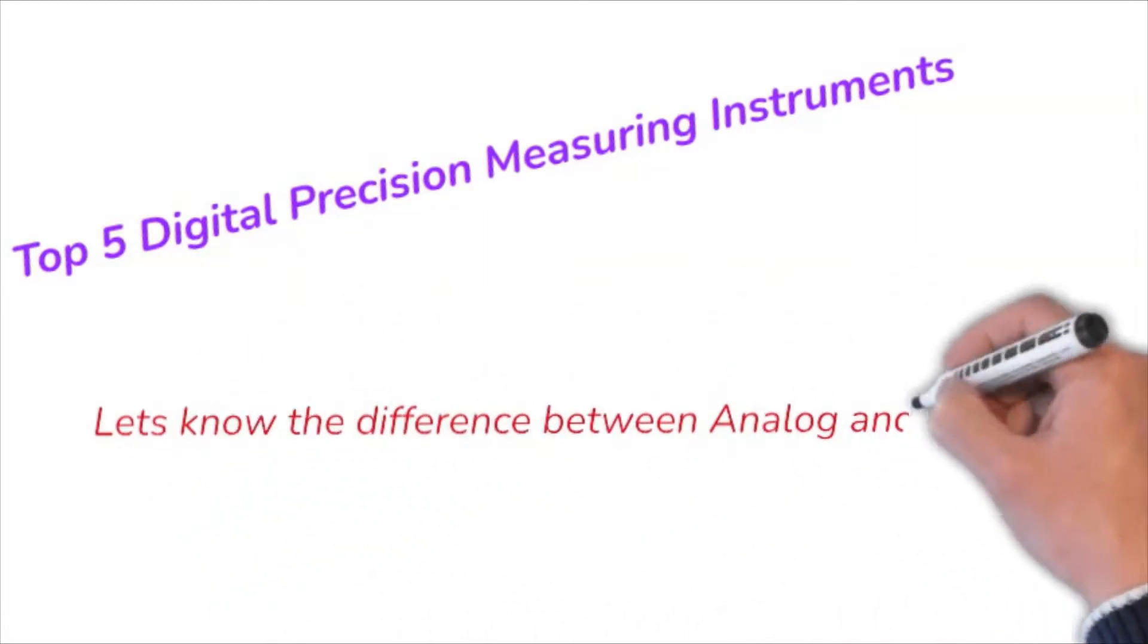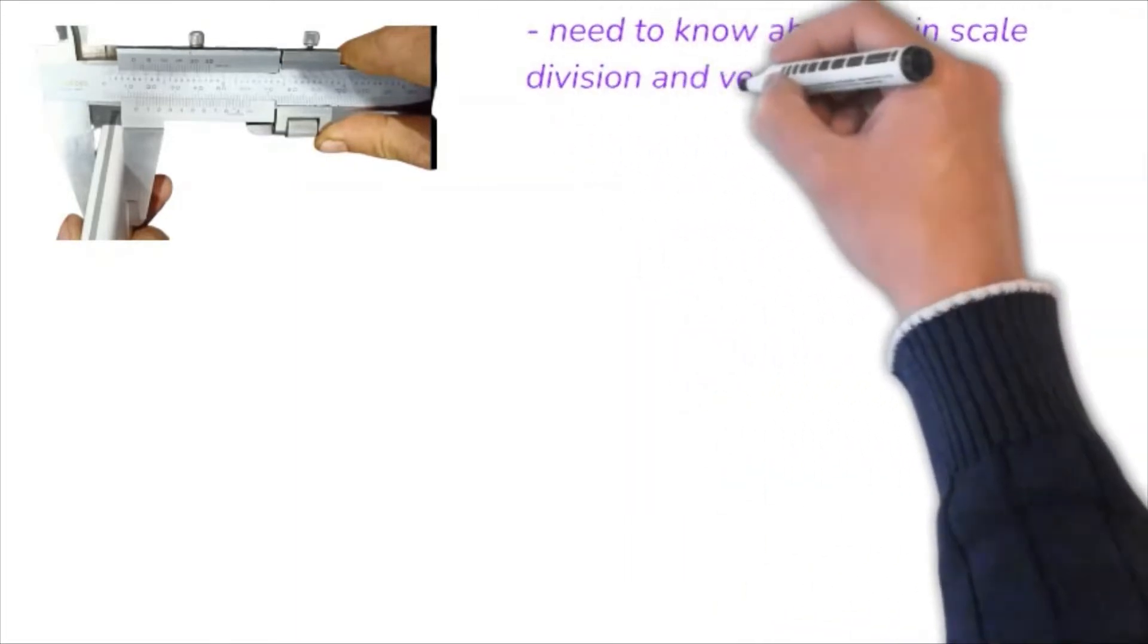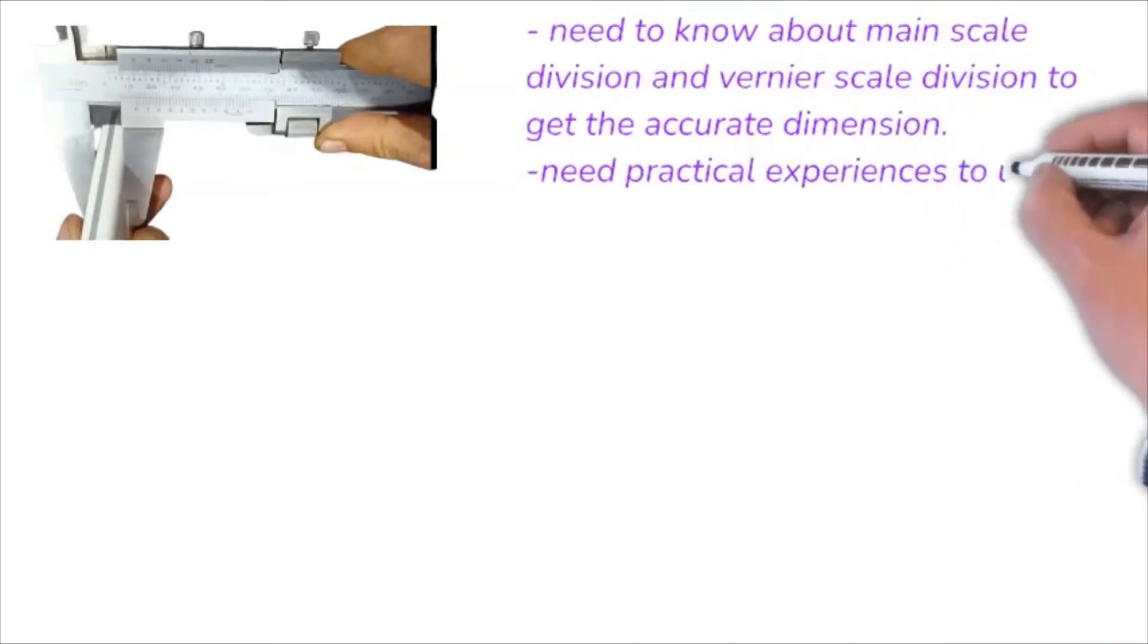Let's know the difference between analog and digital measuring instruments with the help of an example. In the first picture, we have seen that to get the dimension of this workpiece by using analog vernier caliper, need to know about main scale divisions and vernier scale divisions to get accurate dimension. Need practical experiences to use this vernier.